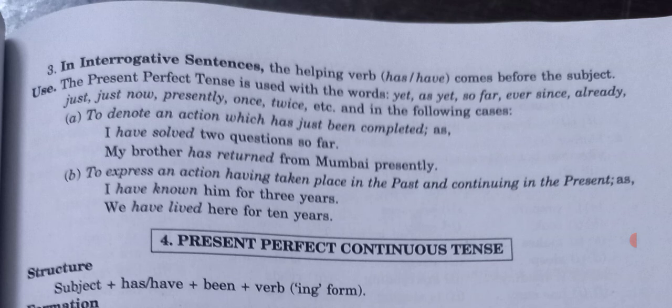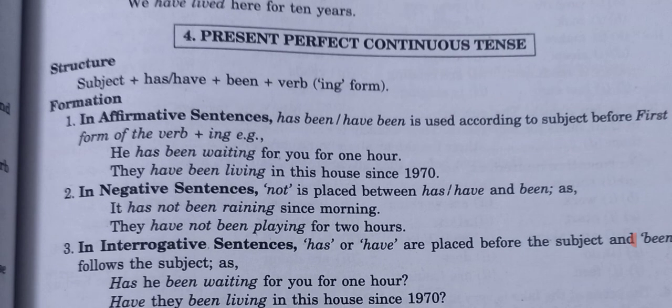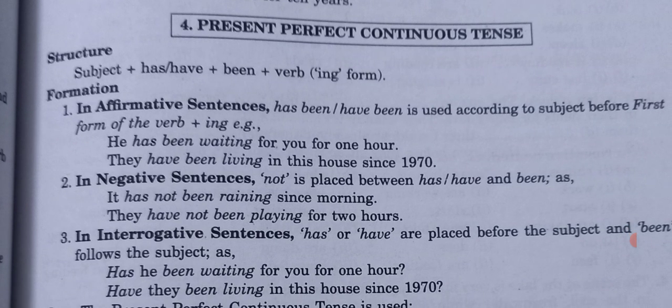Now the fourth tense of the present group — present perfect continuous tense. The structure is: subject plus has or have plus been plus verb plus -ing form. In affirmative sentences, 'has been' with singular and 'have been' with plural, used according to the subject before the first form of the verb plus -ing.